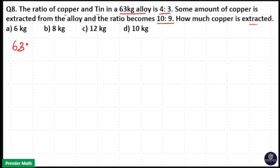So initially there was 63 kilogram alloy and copper and tin in that alloy is in the ratio 4 to 3. After extracting copper the ratio becomes 10 to 9.